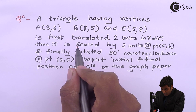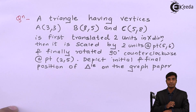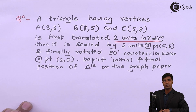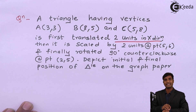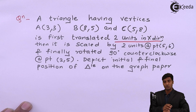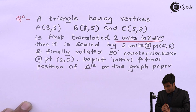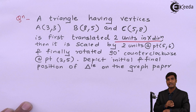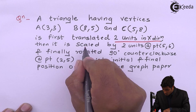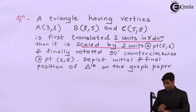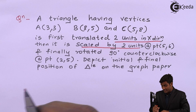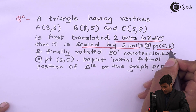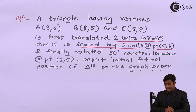The triangle is first translated two units in the x direction, so tx equals 2 and ty equals zero since there is no translation in the y direction. Then it is scaled by two units both in x and y direction, which means sx and sy are both equal to 2, but about a fixed point (5, 6). This is the arbitrary point, so we will consider xf=5 and yf=6.